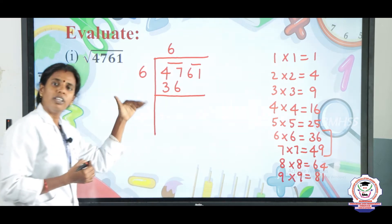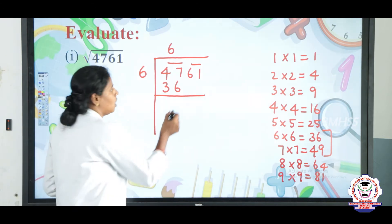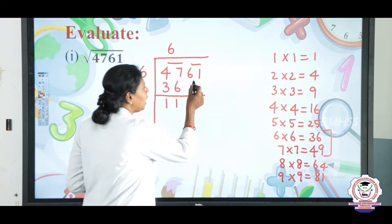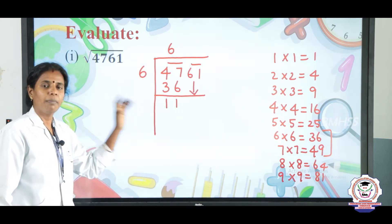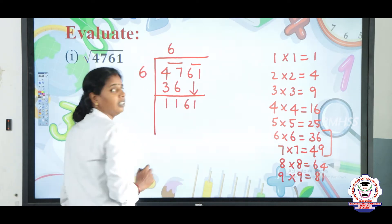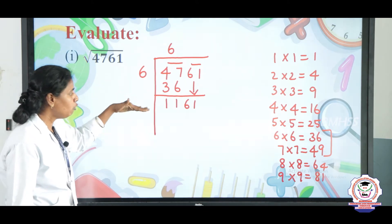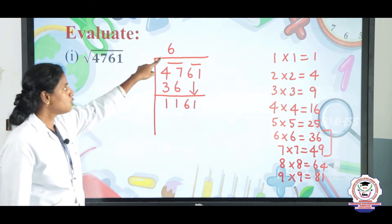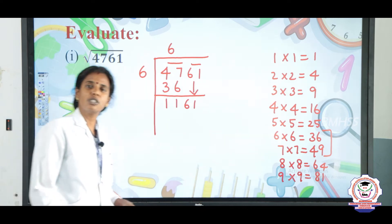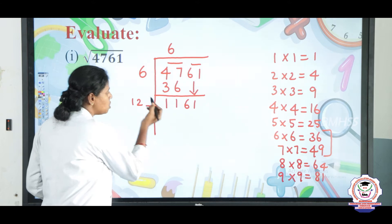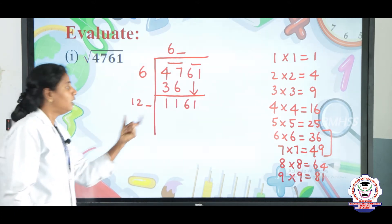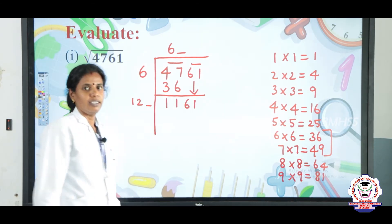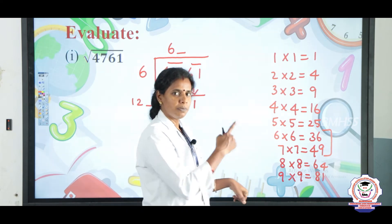The next step is to subtract: 7 minus 6 is 1, and 4 minus 3 is 1, giving remainder 11. Now bring down the next pair 61, giving 1161. To form the new divisor, multiply the quotient 6 by 2: 6×2=12. Next to 12 and in the quotient, we place a new number. In the ones place we need a digit ending in 1 — the possibilities are 1 (since 1×1=1) and 9 (since 9×9=81 also ends in 1).